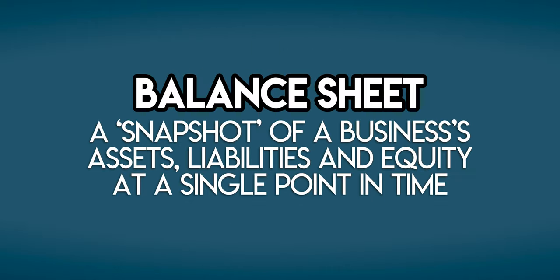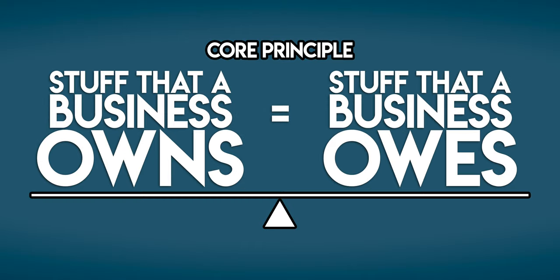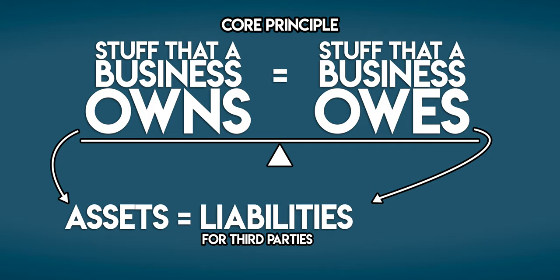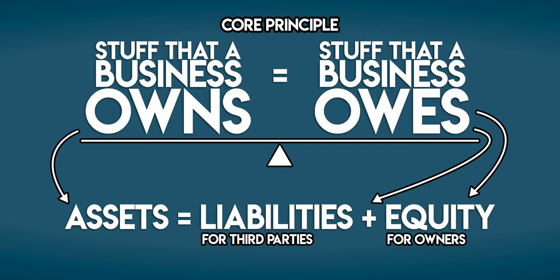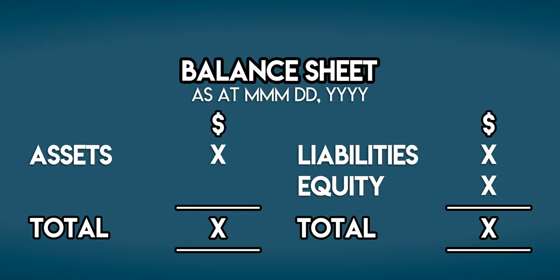A balance sheet, or a statement of financial position, is a financial report that gives us a snapshot of a business's assets, liabilities, and equity at a single point in time. The stuff that a business owns is equal to the stuff that a business owes. A business owns assets and it owes liabilities to third parties. The difference between the two is called equity, which is what the business owes back to its owners. And so we have the accounting equation: assets are equal to liabilities plus equity. When we take a snapshot of this accounting equation at a single point in time, we're looking at a balance sheet.